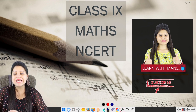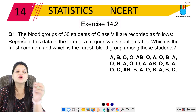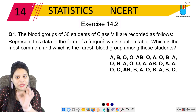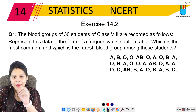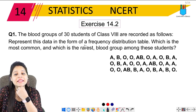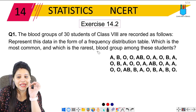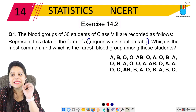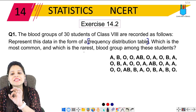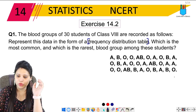Now we are going to start with Exercise 14.2. This is question number 1. The question says the blood group of 30 students of class 8 are recorded as follows. We need to represent this data in the form of a frequency distribution table. First we have to make a frequency table, then we will come to the next part of the question: which is the most common and which is the rarest blood group among these students?